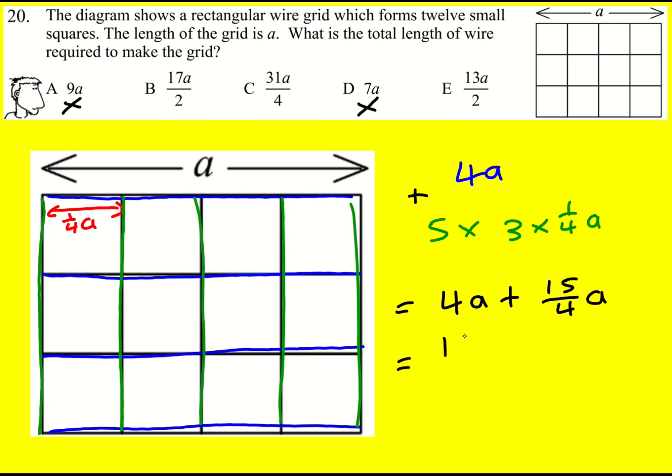So I can write 4a as 16 over 4a. Now we just add like terms like you normally would, 2x plus 3x is 5x. 16 over 4a plus 15 over 4a is going to be 31 over 4a. Nice.